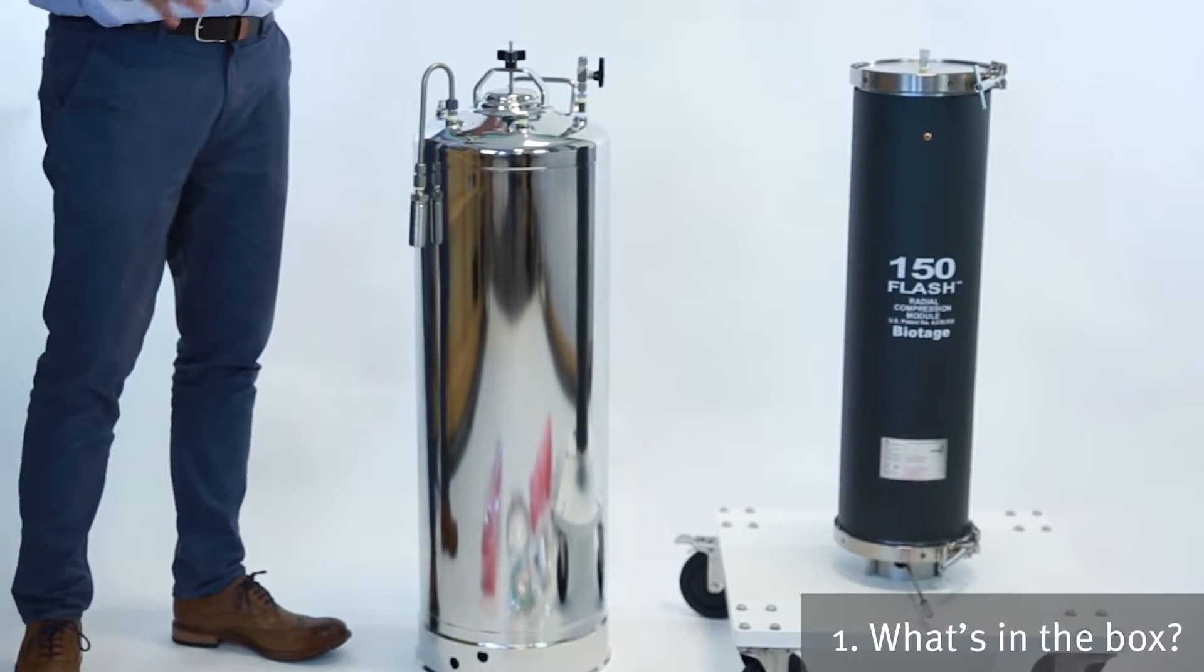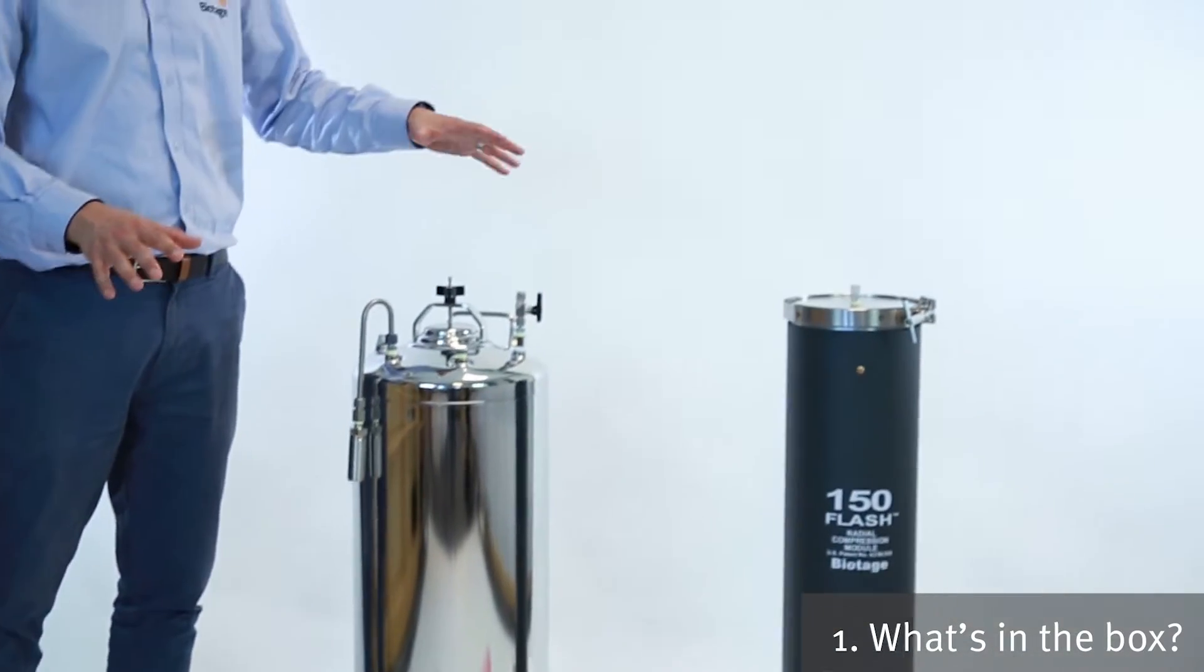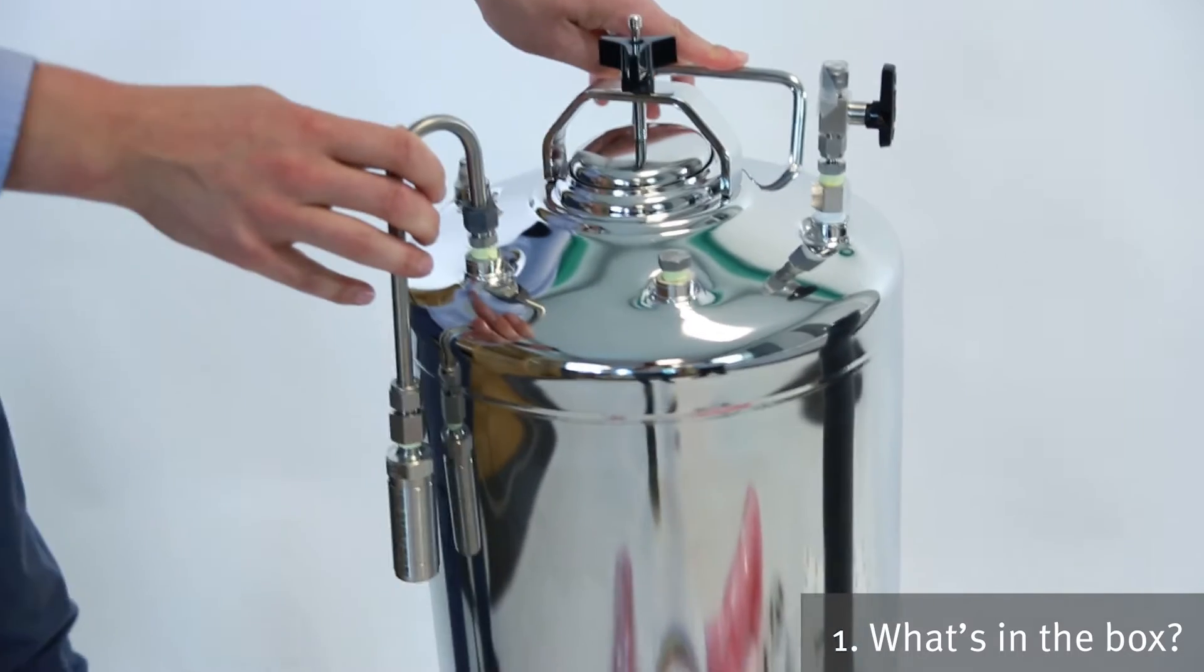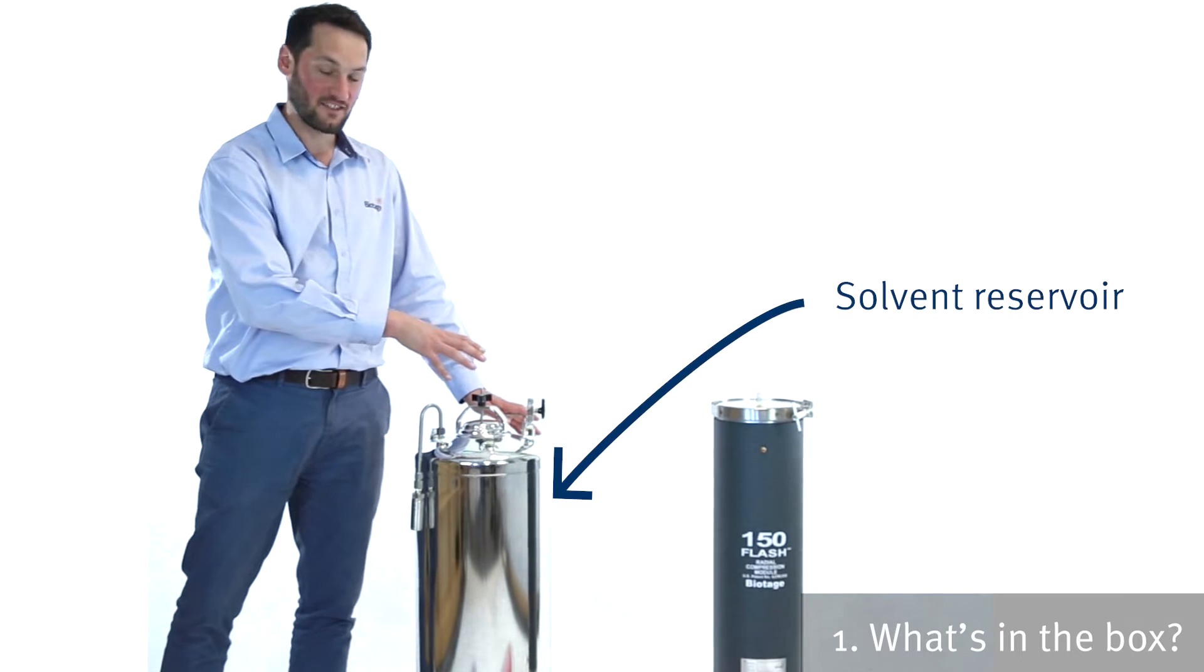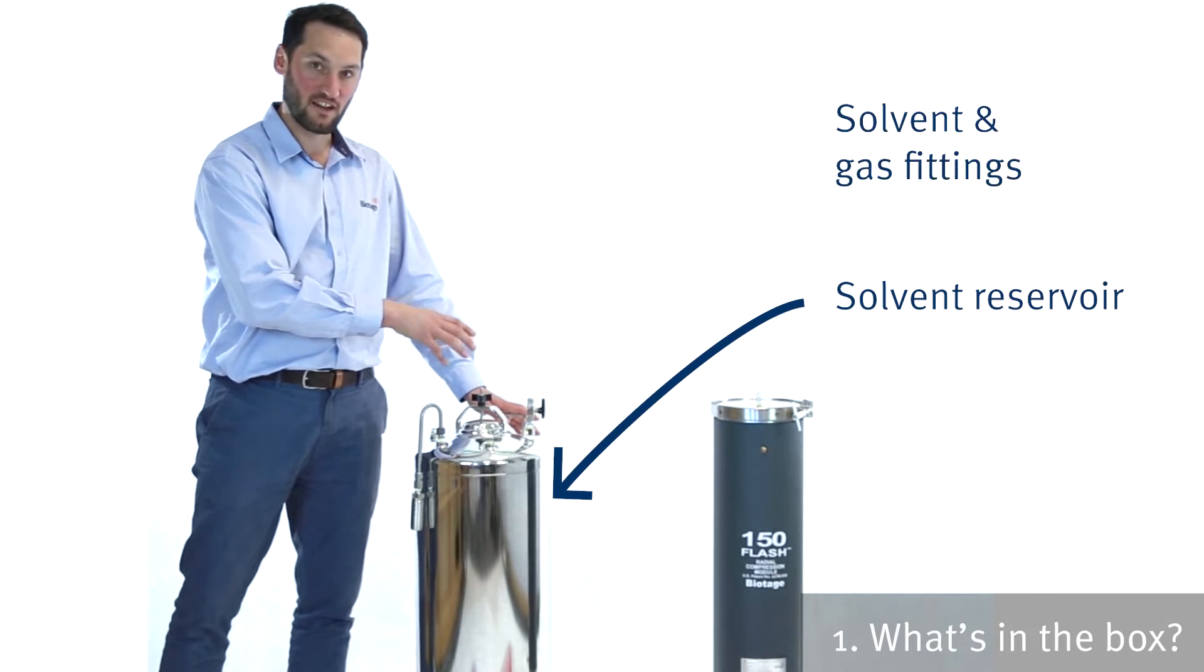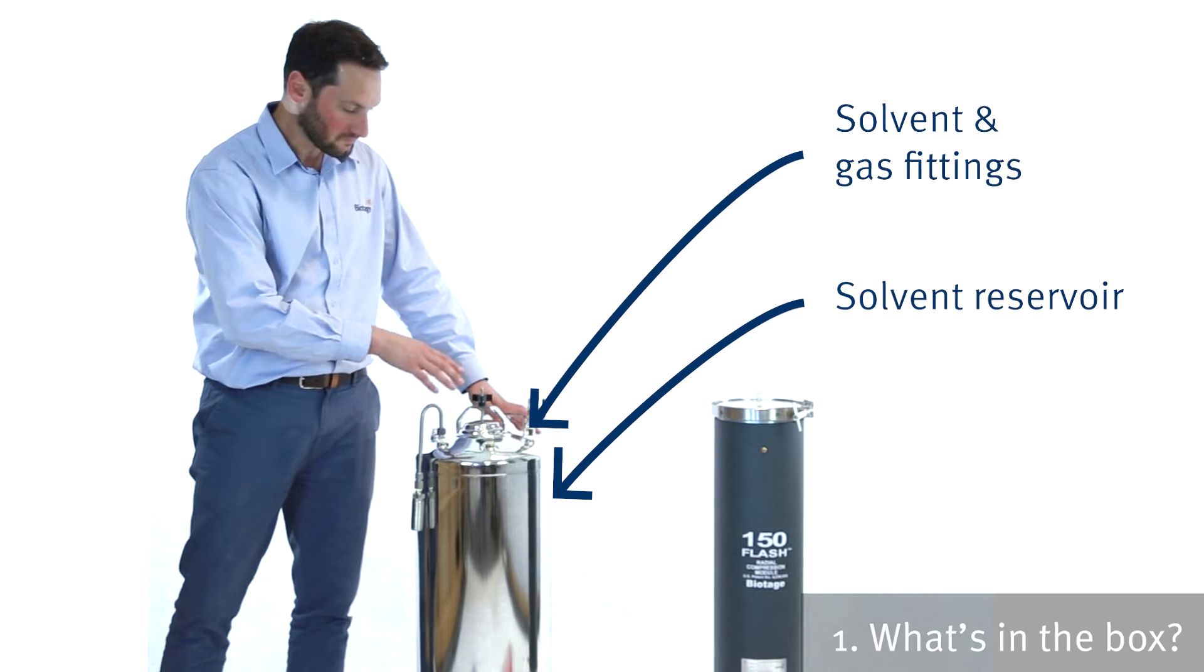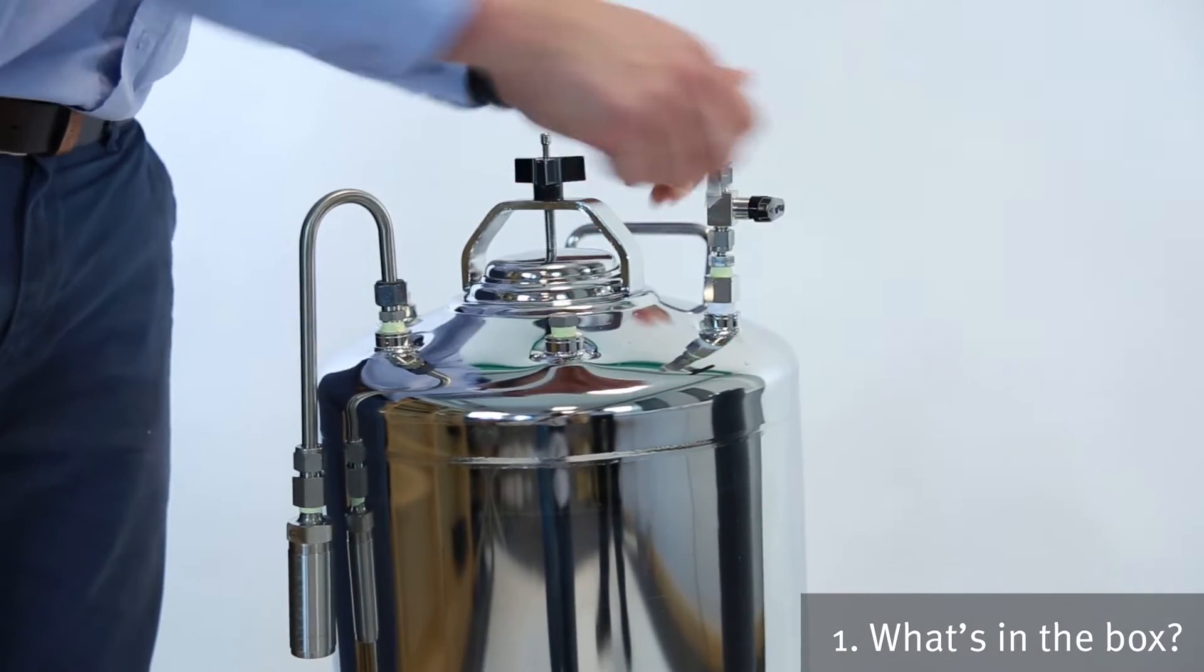So we've taken everything out of the box now. These are the main components that come out of the box. A 60 liter solvent tank made of 384 stainless steel and the various fittings on the top for connecting the solvent lines and the gas fittings. We've got a mixture of swage lock and push fit fittings.